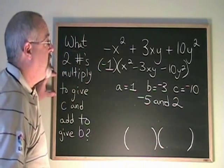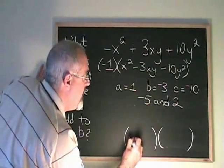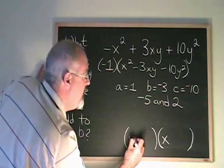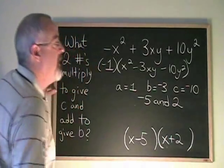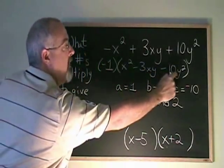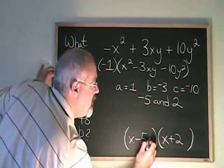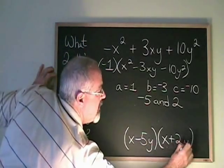I'm nearly finished. The square root of x² is x. I have minus 5 and plus 2. I have this extra y involved, so I have to tag on a y here and here.